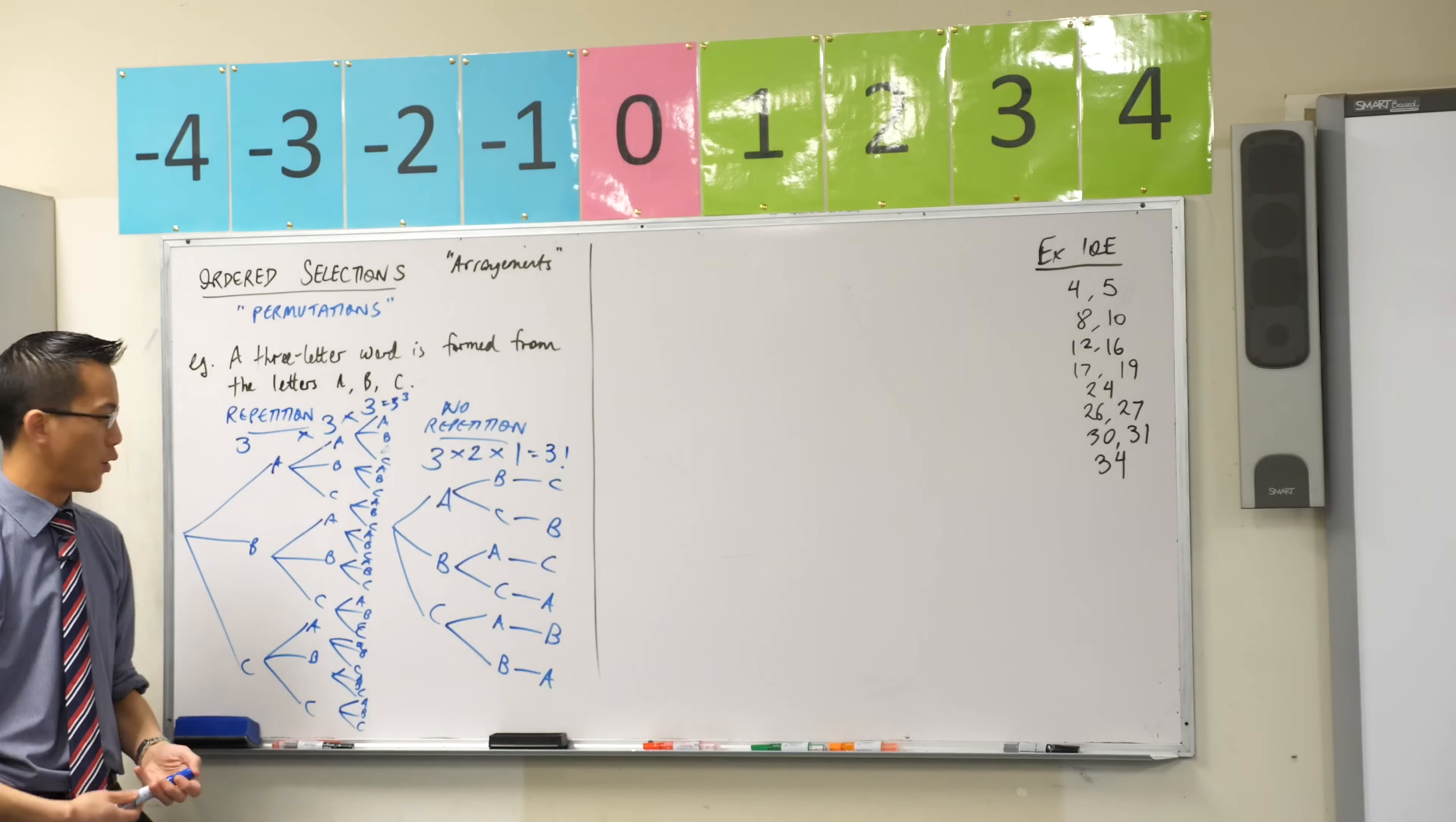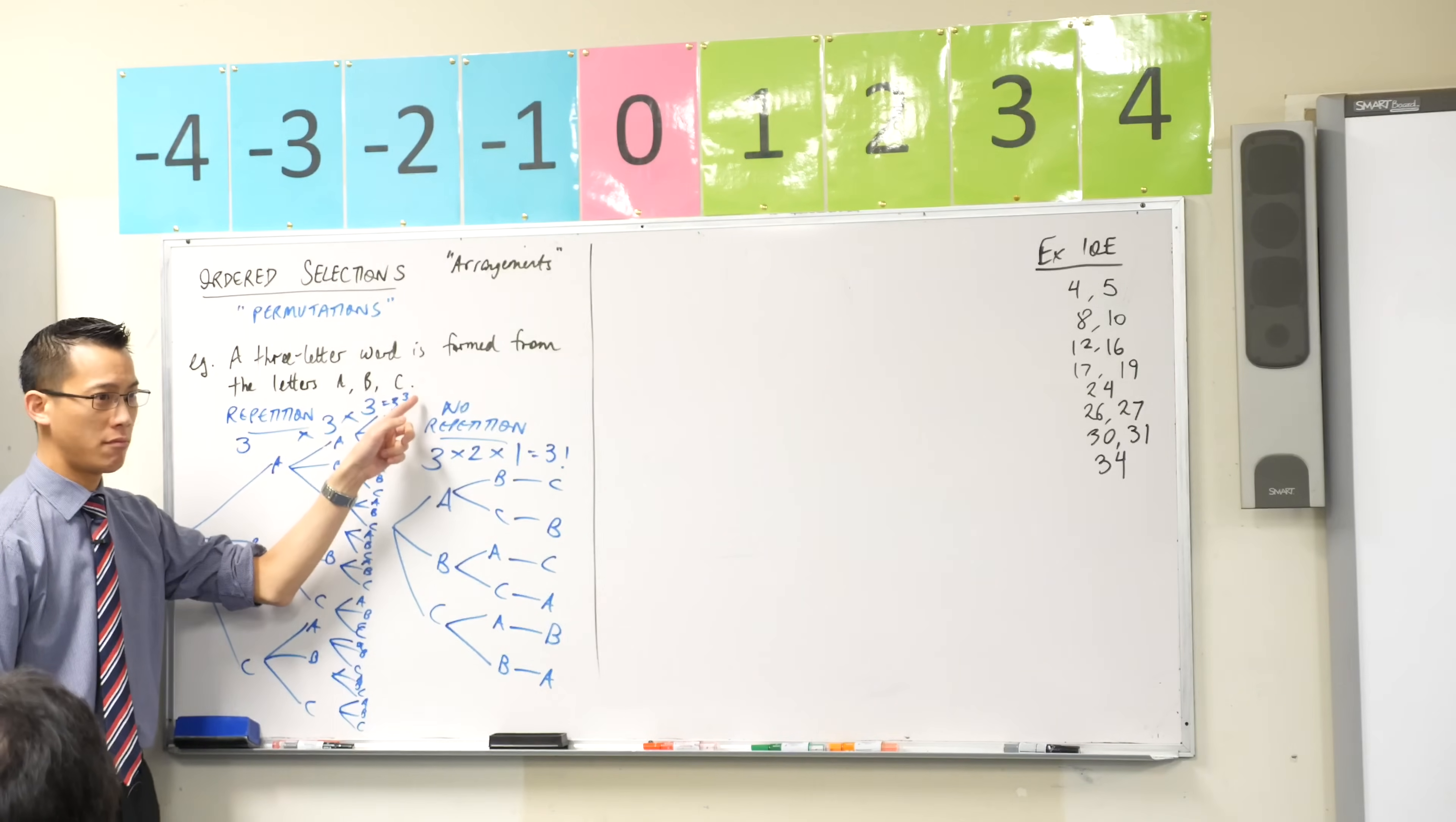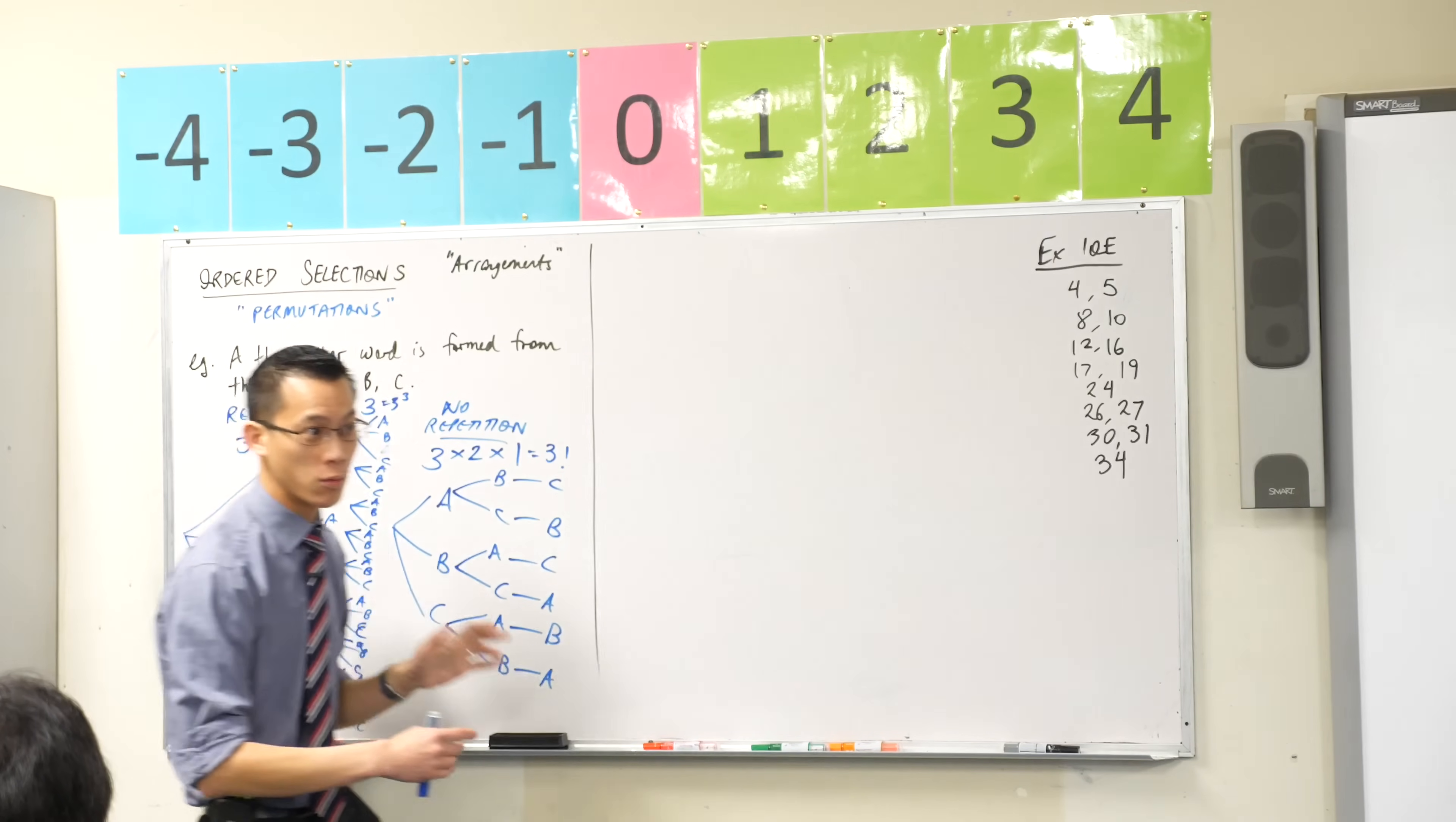So as a general principle, if I did not have three objects, if I had n objects, if I allowed repetition, then I would have n to the power of n. Like you do the same number of objects that you've got. And over here, if you disallow repetition, then instead of n to the power of n, you're going to have n factorial, okay? So this is a general rule that you can use.